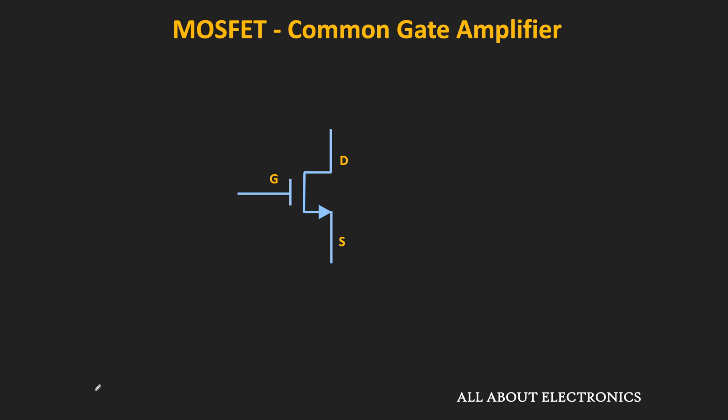In the common gate amplifier, the gate terminal is at AC ground. The input is applied between the source and the ground terminal, while the output is measured between the drain and the ground terminal. Since the gate terminal is at AC ground, we can say the input is applied between the source and the gate terminal, and the output is measured between the drain and the gate terminal. In this way, the gate terminal is common between the input and the output side — hence this configuration is known as the common gate amplifier configuration.